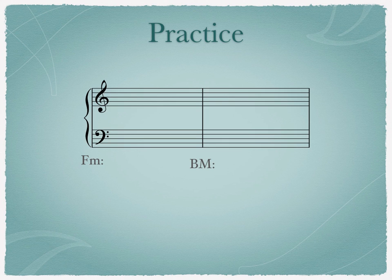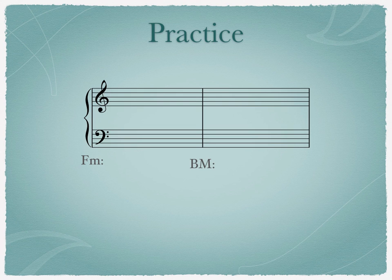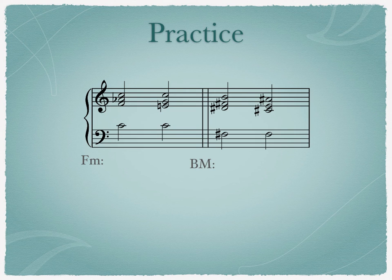Let's see if you can construct some cadential 6-4s of your own. Pause the video and spell out and properly voice lead all the tones in a cadential 6-4 in F minor that moves to a triad, and in B major that moves to a seventh chord. Notice there are no key signatures, so you should add some accidentals. You should have something that looks similar to these. Your notes may be in different voices, but they should all be present in your answer.